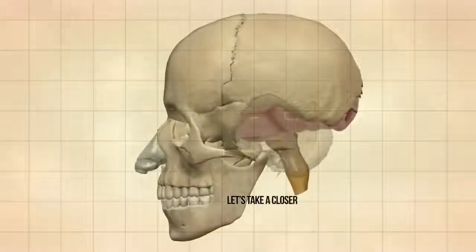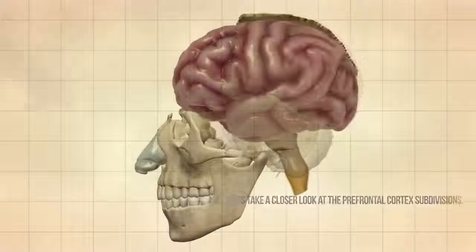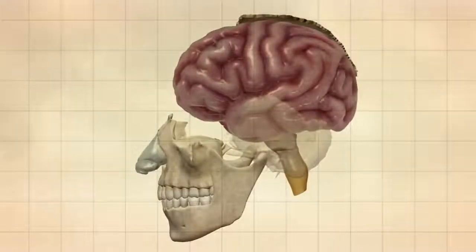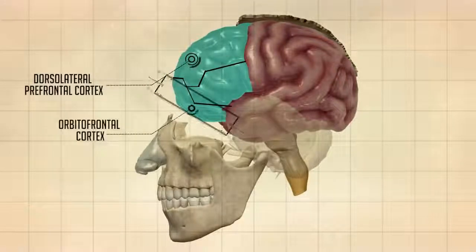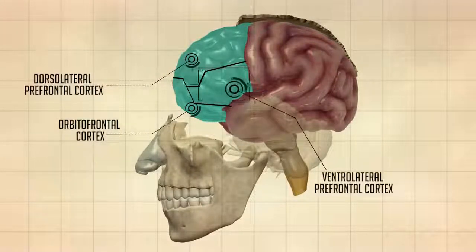Let's take a closer look at the prefrontal cortex subdivisions. This area of the brain has been divided into three main subdivisions, known as the dorsolateral prefrontal cortex, orbitofrontal cortex, and the ventrolateral prefrontal cortex.